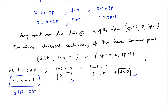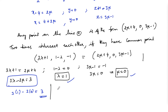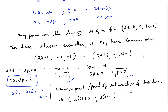Checking: 3(1) - 2(0) = 3 - 0 = 3. This is satisfied. Therefore, the point of intersection can be found by substituting μ=0 into Line 2: (2(0)+4, 0, 3(0)-1) = (4, 0, -1). Substituting λ=1 into Line 1: (3(1)+1, 1-1, -1) = (4, 0, -1). Both give the same point, so the point of intersection is (4, 0, -1).